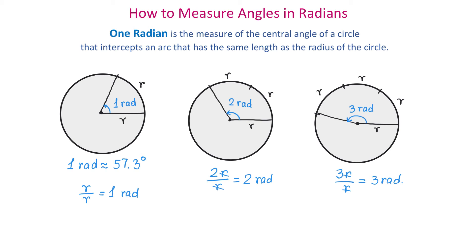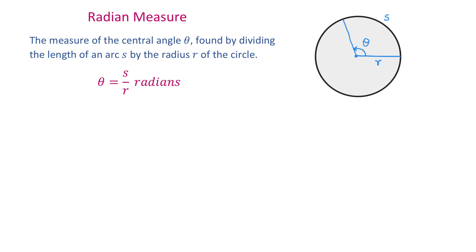The measure of an angle in radians tells us how many times the radius goes into the arc. The radian measure is defined as follows: for a circle with radius r and a central angle that intercepts an arc of length s, the measure of angle theta equals the arc length s divided by the radius r.